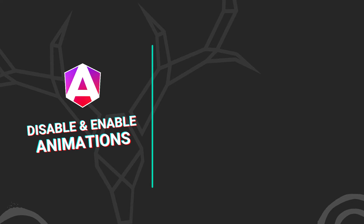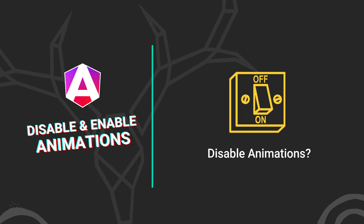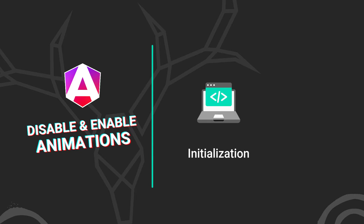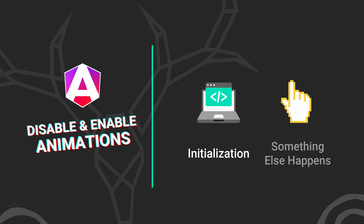I'm willing to bet that if you've spent very much time working with Angular animations you've had the need or desire to disable them for one reason or another. Something that I encounter quite a bit are animations that run on component initialization. I have animations that I only expect to run when an interaction occurs or when data changes, but they run on initialization anyway. This is something I'm going to show you how to fix in this video. Let's get to it!